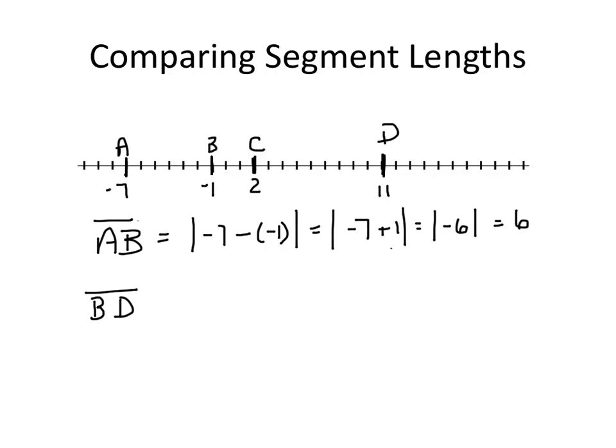Now, BD is a little bit different. So we're going to have the absolute value of negative 1 minus 11. Well, negative 1 minus 11 is just negative 12. Its absolute value is positive 12. So AB has a length of 6, and BD has a length of 12.